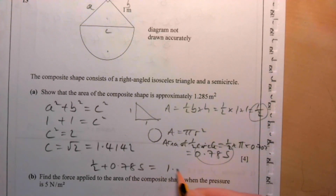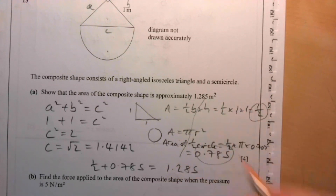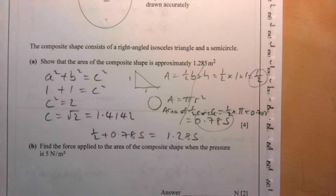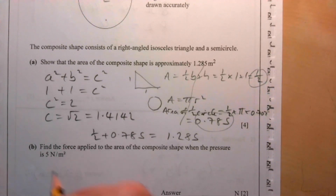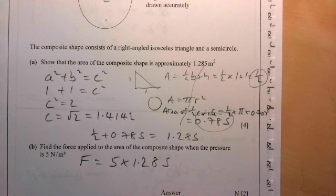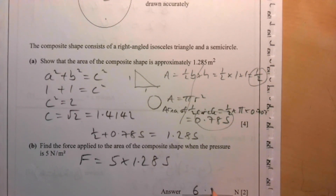To find the force applied to the area of the composite shape when pressure is 5 newton per square metre: force equals 5 times 1.285, giving 6.43 newtons.